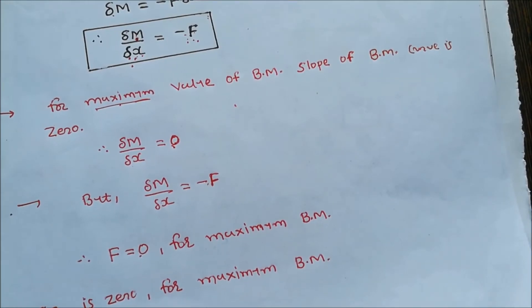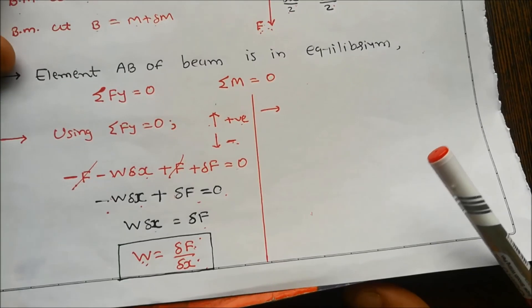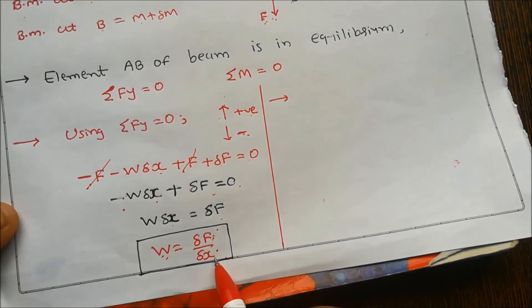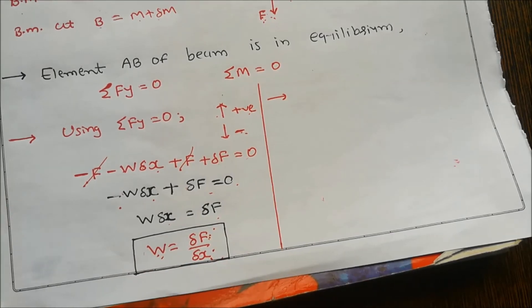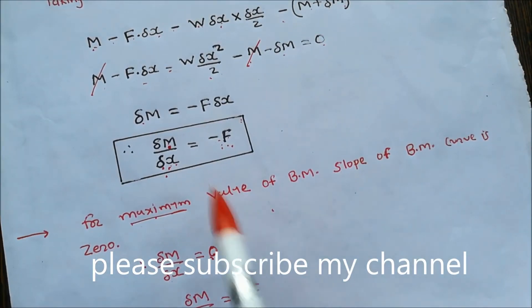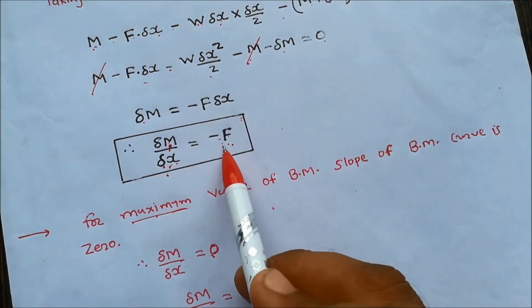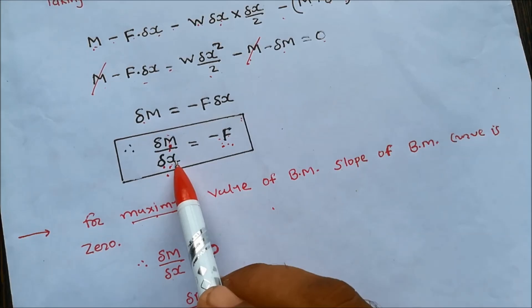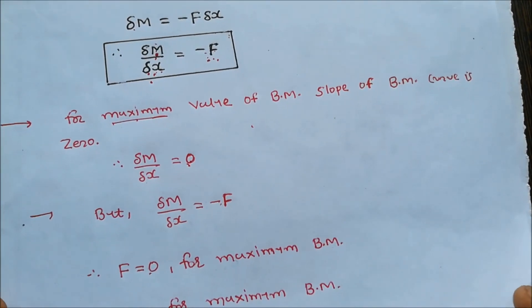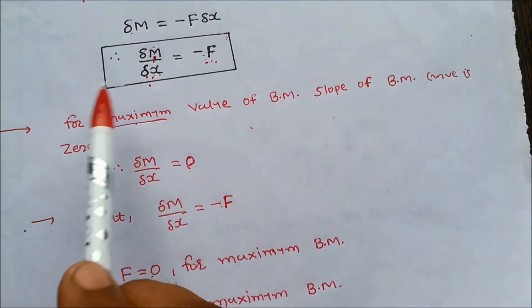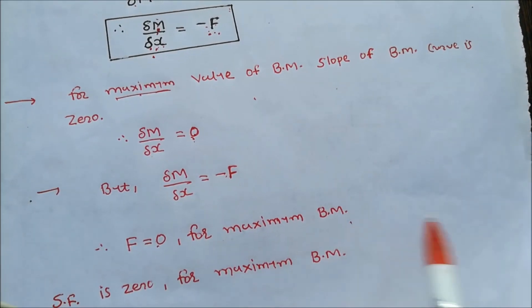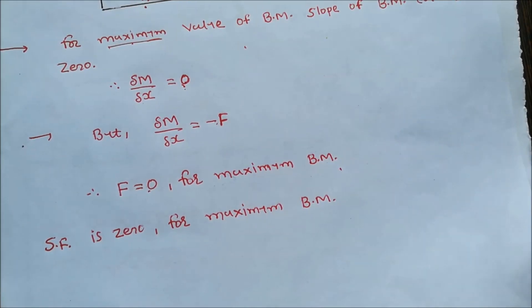In summary, we have derived three relations. First: W equals delta F by delta x — the rate of change of shear force with respect to distance equals the intensity of load. Second: delta M by delta x equals minus F — the rate of change of bending moment with respect to distance equals the shear force at that section. Third: since the slope of the bending moment curve is zero at maximum bending moment, and delta M by delta x equals minus F, we conclude that when shear force is zero, bending moment is maximum.